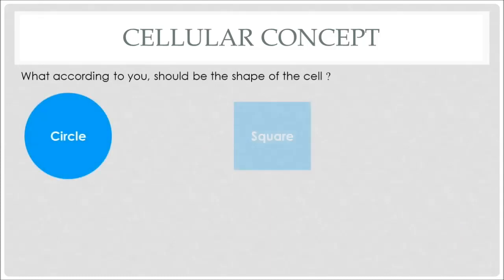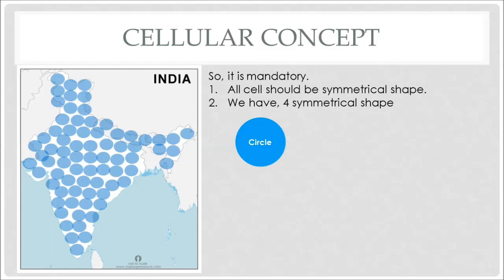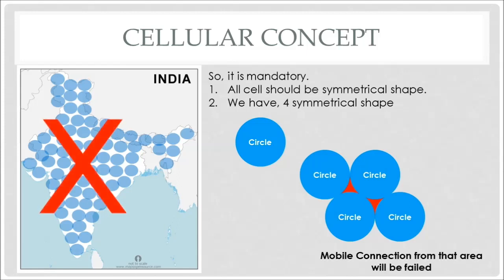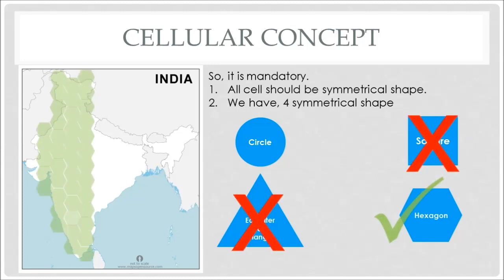Think for a while — what according to you should be the shape of the cell? If we select the shape of a cell as a circle, then the area between two circles will not get covered by the antenna, and any attempt at communication from that area will fail. Thus a circular shape is not possible. Comparing the remaining shapes — equilateral triangle, square, and hexagon — the hexagon has the highest area compared to the other two shapes. So we select the shape of a cell as a hexagon.